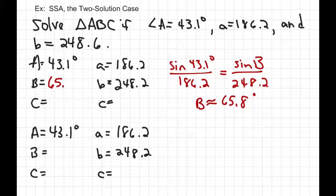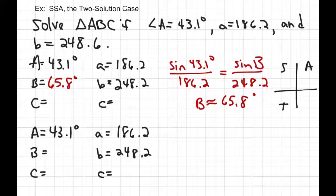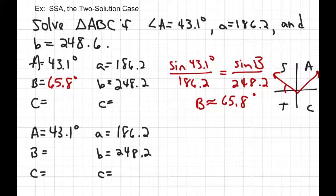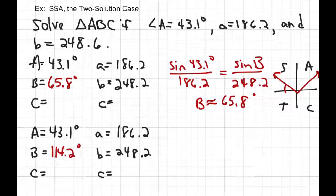That's angle B for the first case. Remember, sines are positive in both the first and second quadrant. So if sine gives 65.8 degrees in the first quadrant, there must be a second-quadrant angle with the same reference angle: 180 minus 65.8 equals 114.2 degrees. Does this second solution exist? Do the two angles in solution 2 add up to more than 180? No — 43.1 plus 114.2 is 157.3, which is less than 180. So there must be two solutions to this problem.